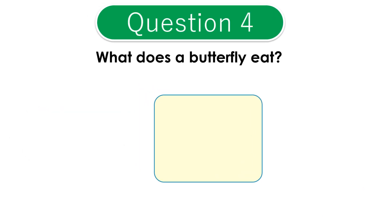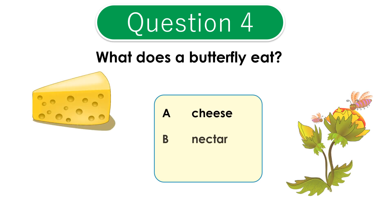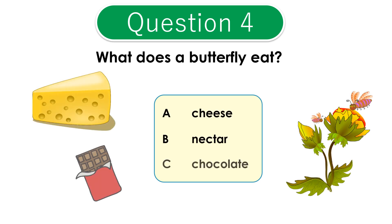Question 4: What does a butterfly eat? A: cheese. B: nectar. C: chocolate. The answer is B: nectar.